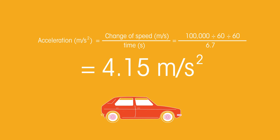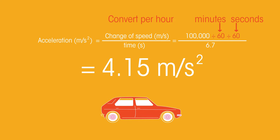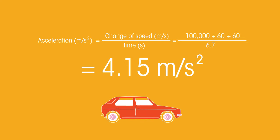This calculation is because we have to turn the 100 kilometers into meters first, then turn the per hour into seconds by turning it into minutes, and then seconds, and divide it by 6.7 seconds to get the acceleration.